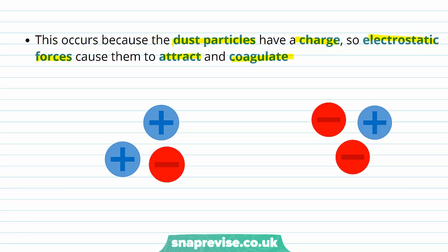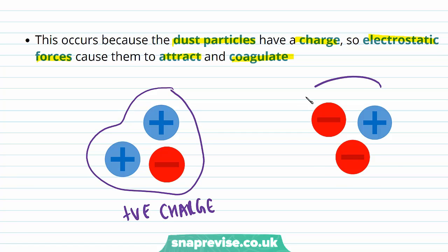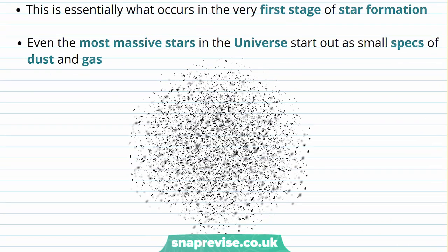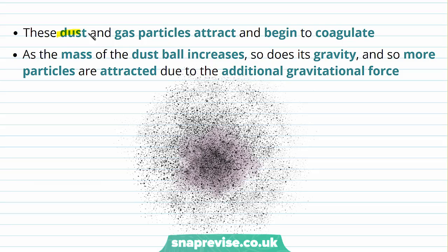Let's consider these two dust particles here. One is positively charged, while the other has a net negative charge. This means that they're going to feel a force of electrostatic attraction between them. This very simple process is essentially what occurs in the very first stage of star formation. Even the most massive stars in the universe started out as small specks of dust and gas, like those in this image below. These dust and gas particles attract each other and begin to coagulate.